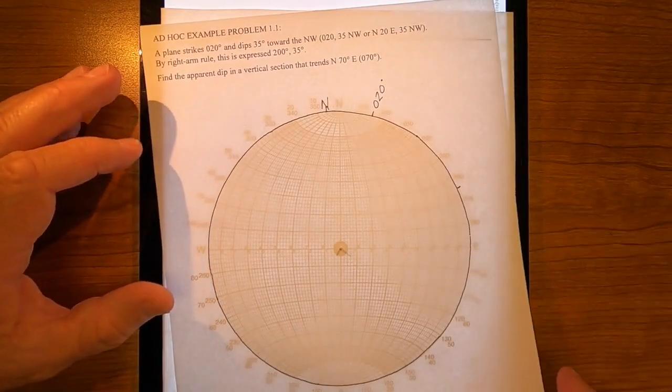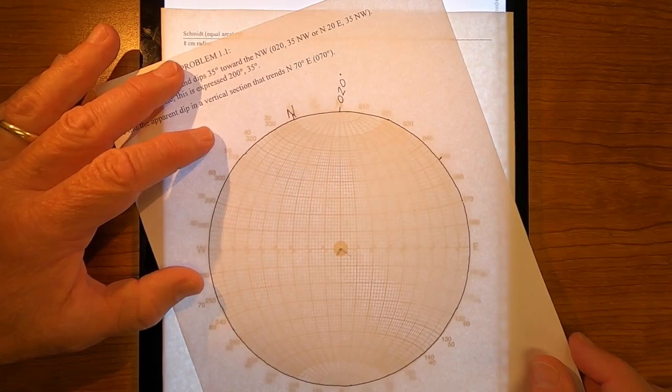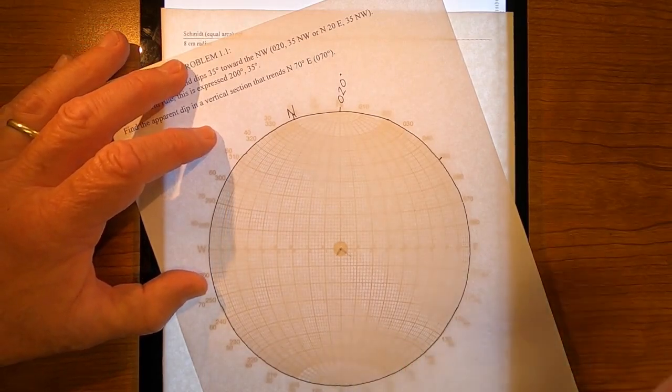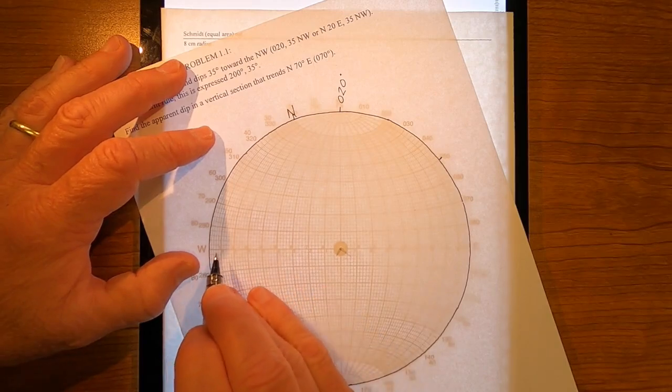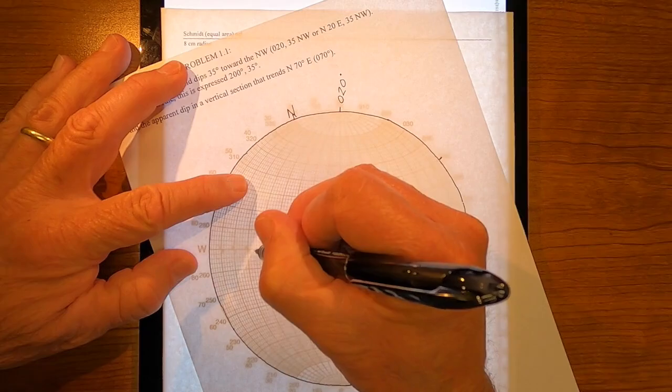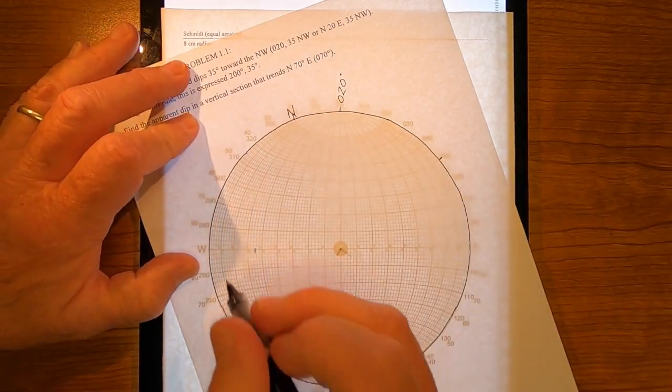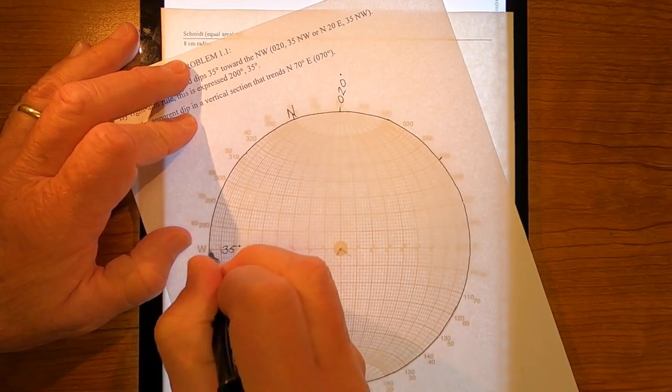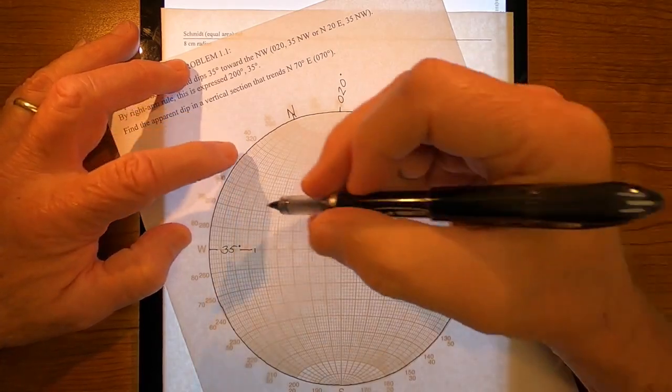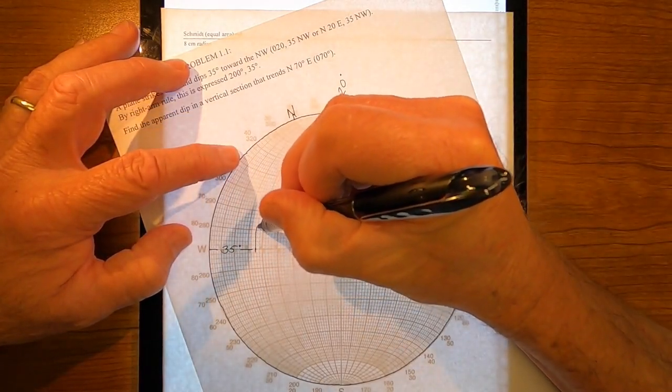I guess let's go ahead and put that on. So now I'm going to count in 35 from this side. 10, 20, 30, 5. And that, then, is a 35 degree angle, the dip angle. I need to trace that great circle.